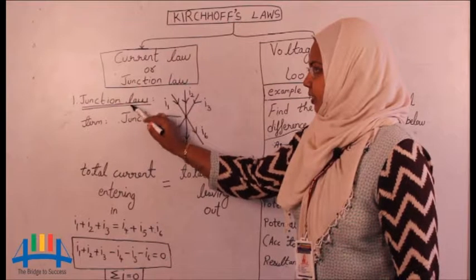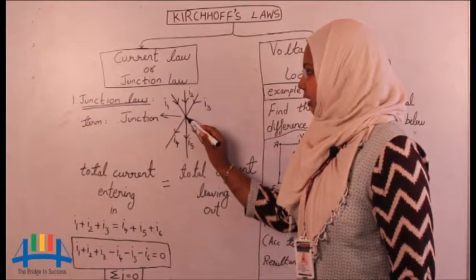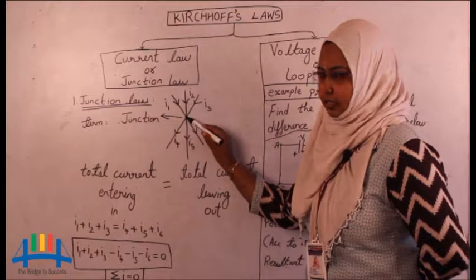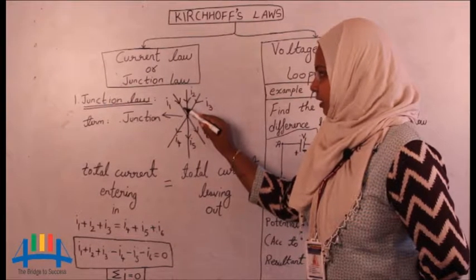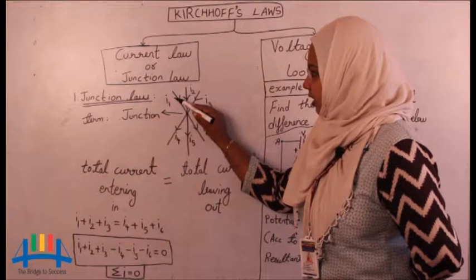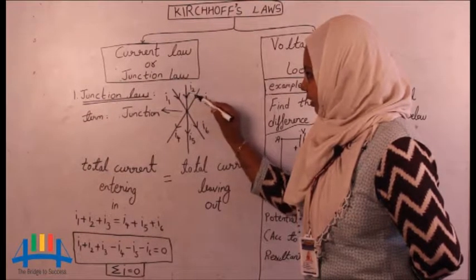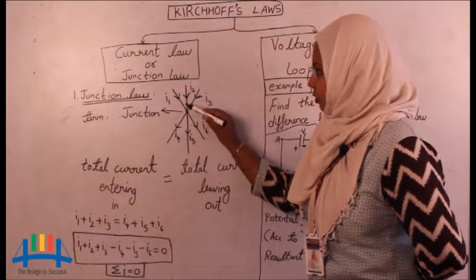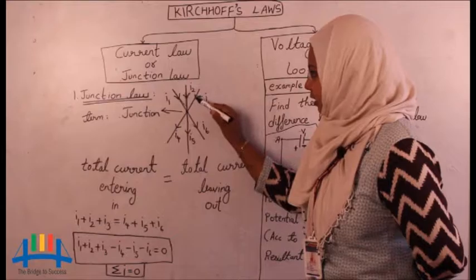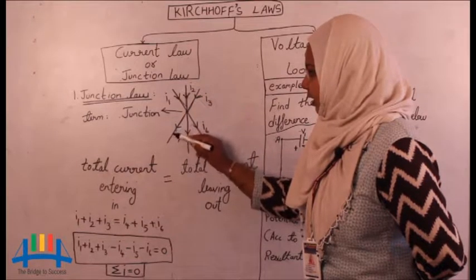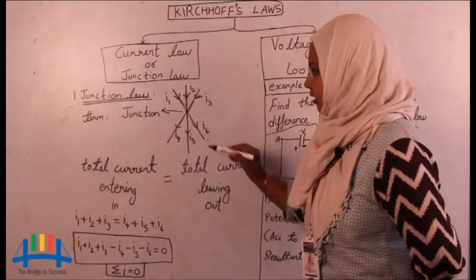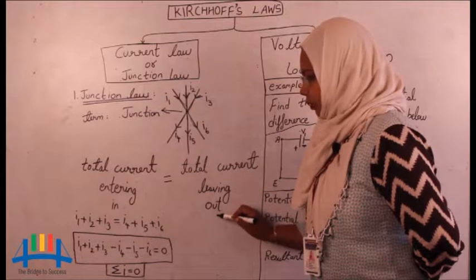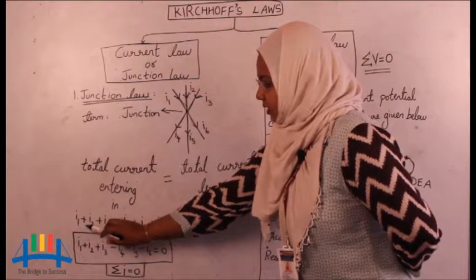Let us first discuss about the first law — the junction law. The term junction means where more than two lines meet. As you can see here, there are three lines meeting at a point; this is called a junction. Assume these are three conducting wires through which current is flowing. The arrow pointing towards the junction means the current is entering into the junction. So the total current into the junction is equal to the total current leaving the junction. This is the first law.